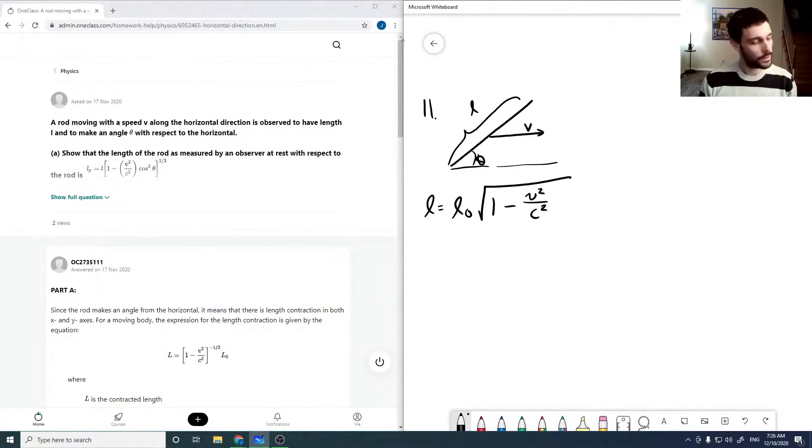But now we're at an angle. So rather than using this, we have to use the different directions here. So it's only going to be observed to be compressed in one direction, specifically the direction that it's moving.